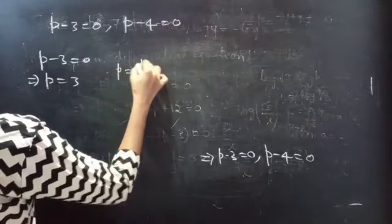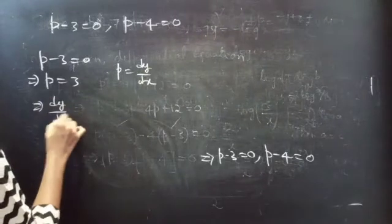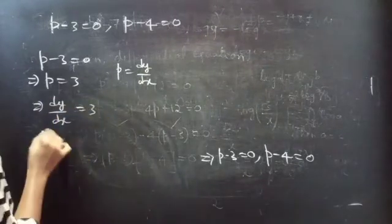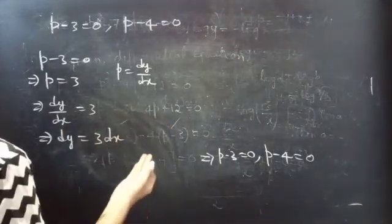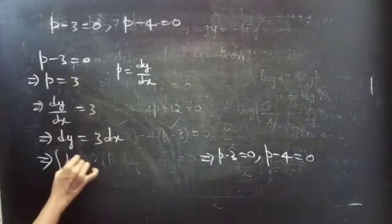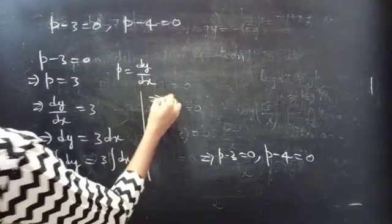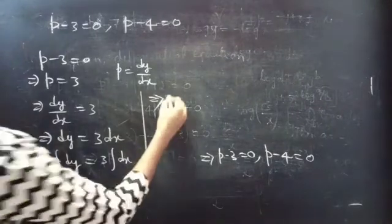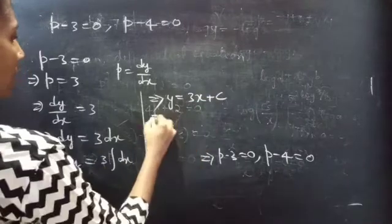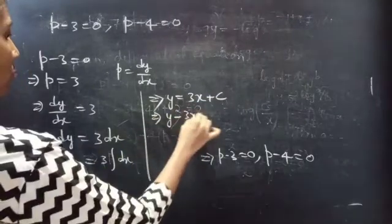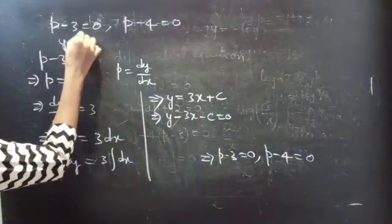Now, put P equals to dy by dx. Then dy by dx equals to 3. Then dy equals to 3 into dx. Now, perform integration: integral dy equals to 3 into integral dx. Then integral dy is y equals to 3 into integral dx, which is x, plus integral constant c. You can write this as y minus 3x minus c equals to 0, which is the solution for the first differential equation.